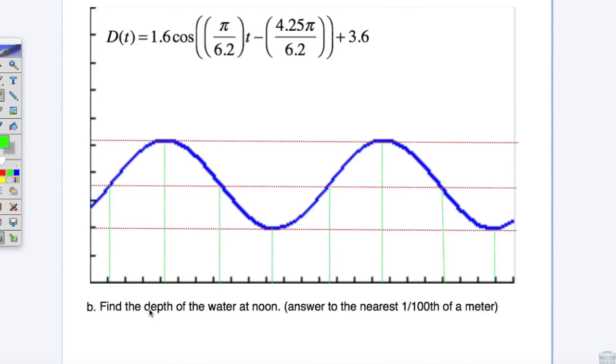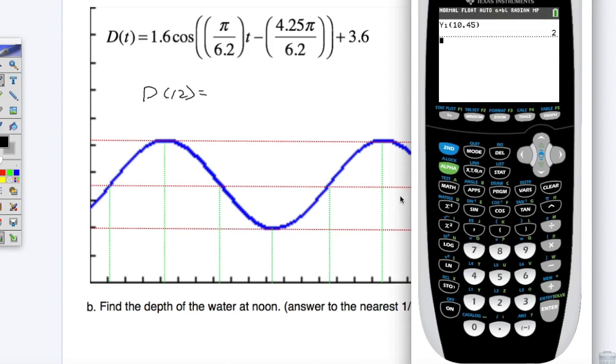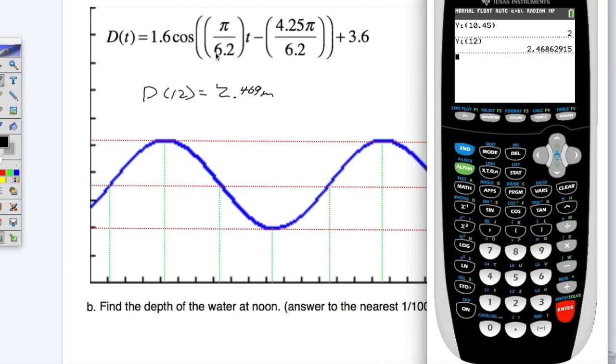So how do we find the depth of the water at noon? Kind of straightforward. Finding the depth at 12 is very straightforward. We just go into our calculator and find y1 at 12, and that gives us a depth of 2.469 meters at noon.